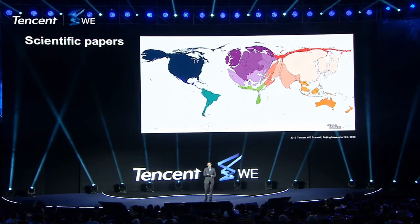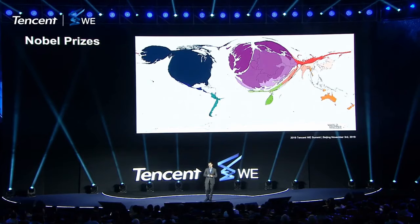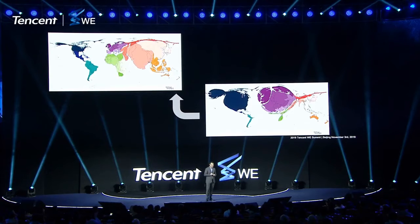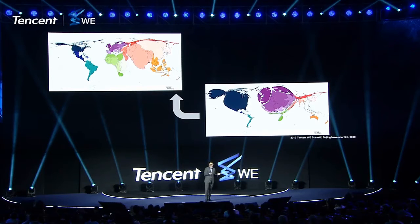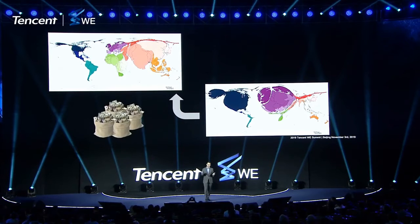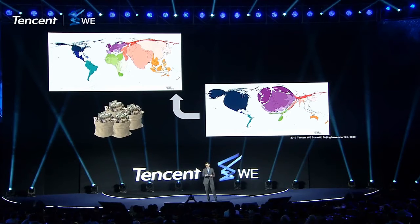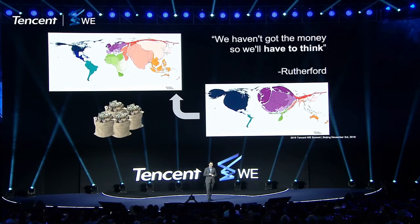This gets even more dramatic if we look at Nobel Prizes. So clearly, this is using human capital around the globe in a terrible way. We're giving a very small number of people the tools to do the biggest research. What can we do to equalize this? Well, one very obvious route is you can throw lots of money at the problem, and presumably that would go part way into addressing some of these issues. But in the famous words of Rutherford, we haven't got that money, so we'll have to think.